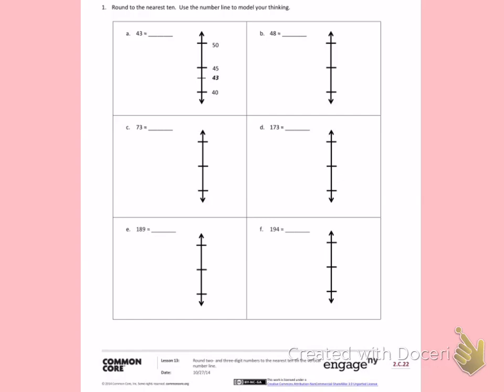Letter A has been done for you. We can see that we are trying to round 43. So the two 10s 43 fits between are 40 and 50. Our halfway number is 45, and they modeled 43 on the number line. 43 has not made it to the halfway number, so I am going to round down. 43 will round to 40.